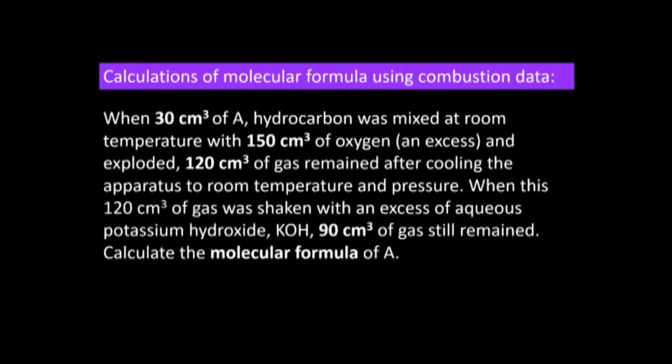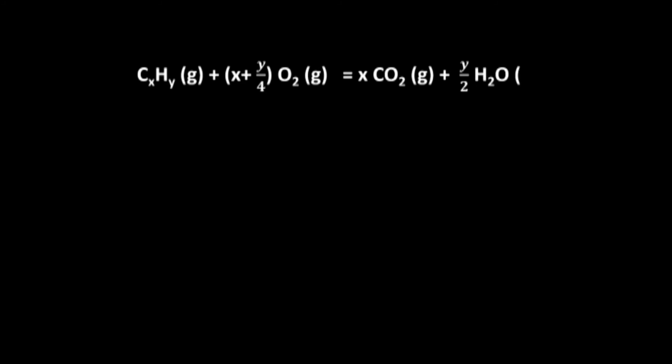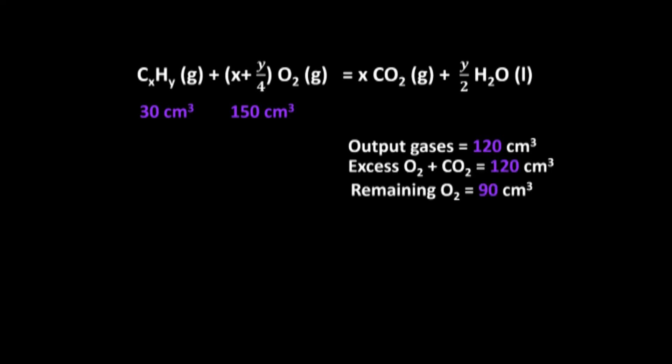The gas stream is passed through potassium hydroxide (an alkali), which absorbs CO₂. The remaining volume is 90 cm³, which is unreacted oxygen. The balanced equation for combustion of hydrocarbon CₓHᵧ gives x molecules of CO₂ and y/2 molecules of water. From the data: 30 cm³ hydrocarbon and 150 cm³ oxygen input, giving 120 cm³ of CO₂ plus excess oxygen output.